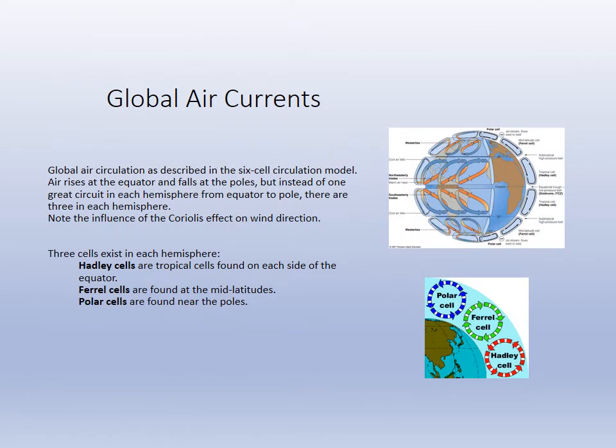The westerlies are part of global airflow. Global airflow is due to the uneven heating of the earth causing convection cells. These convection cells exist in both the northern and southern hemispheres: two Hadley cells, one in the north and one in the south; two Ferrel cells, one in the north and one in the south; and two polar cells.